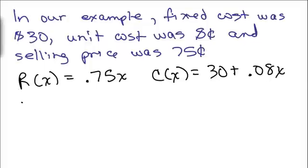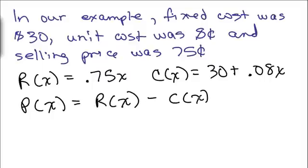And our profit function then is always the revenue minus how much it cost us. So if you wanted to figure out what the profit function was just by writing one function, we would take the 0.75x and subtract 30 + 0.08x.